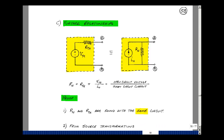Thevenin's theorem lets you replace a very complex circuit with just one voltage source and one resistance. Norton's theorem does the same thing, replacing the circuit with one current source and one resistance. Because of source transformations, there must be a relationship between these two circuits. The Norton resistance equals the Thevenin resistance, and both equal the ratio of V-Thevenin to I-Norton — the open circuit voltage divided by the short circuit current — with the load removed.